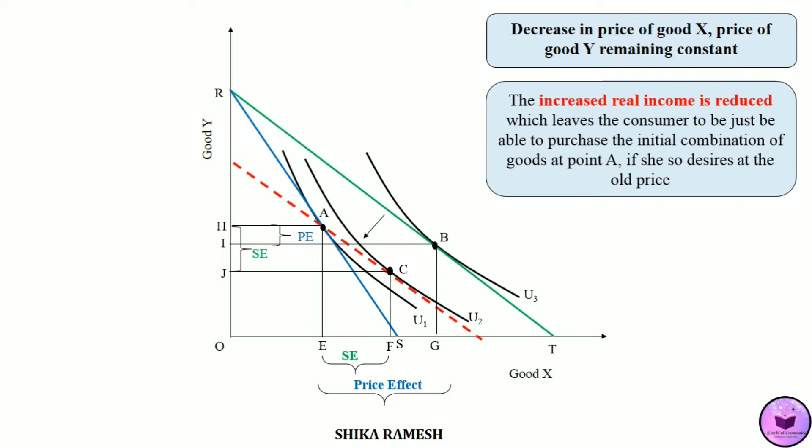Comparing point A and point C, we can see that good X has become comparatively cheaper than good Y because the price of good X has decreased with the price of good Y remaining the same. Because good X has become cheaper, the consumer is purchasing EF additional units of good X, which is the substitution effect. When purchasing this EF additional amount, the consumer is also reaching a higher utility level compared to the utility at point A.